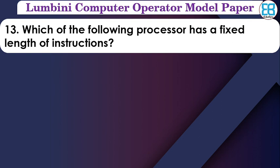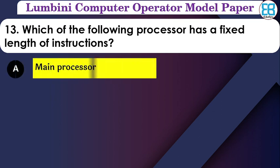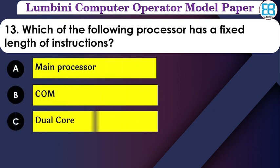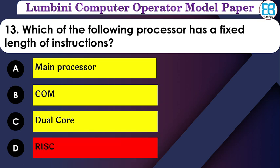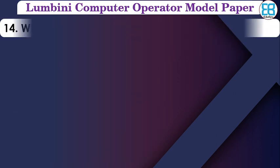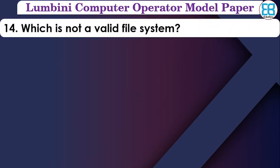Which processor has a fixed length of instruction? The options include: dual core, RISC. The correct option is RISC — RISC processors have a fixed length of instruction.